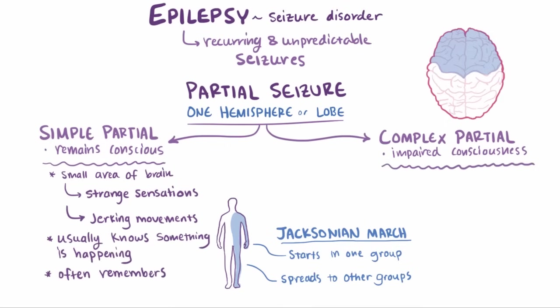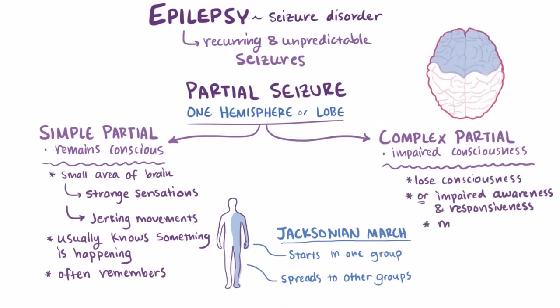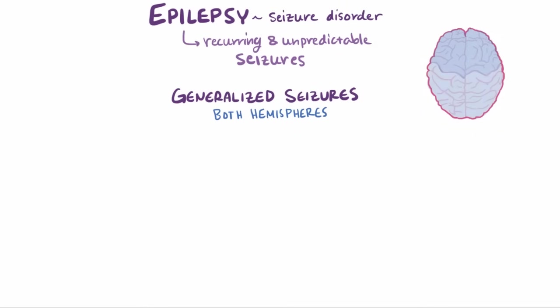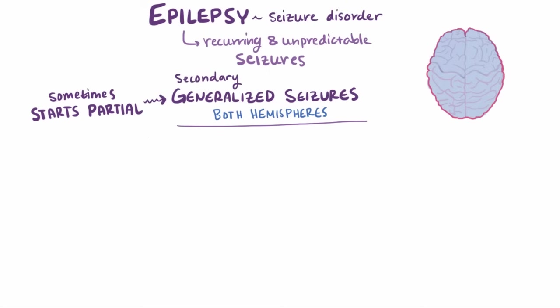Complex partial seizures, on the other hand, involve losing consciousness completely or having impaired awareness and responsiveness, so they might not remember exactly what happened during a seizure. In contrast to partial or focal seizures, a generalized seizure is where both hemispheres of the brain are affected. Sometimes a seizure will start out as a partial seizure and then quickly develop into a generalized seizure, called a secondary generalized seizure because a partial seizure came before it and was the primary event.